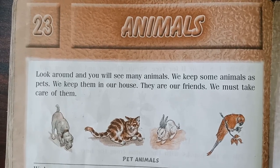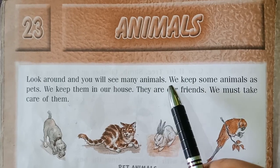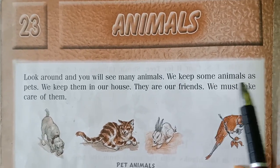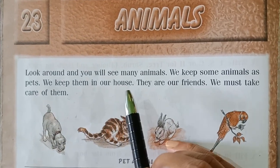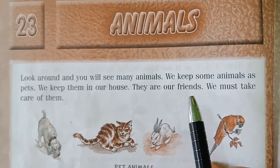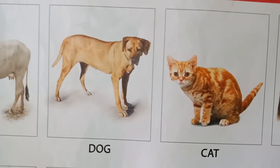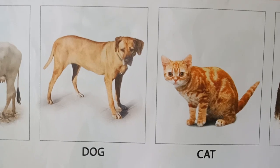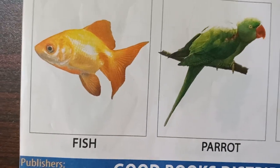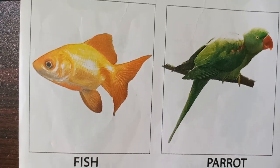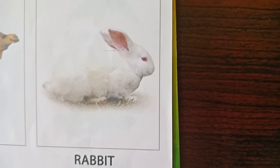Let us start discussing about animals. Look around and you will see many animals. We keep some animals as pets — we keep them in our house, they are our friends, and we must take care of them. Examples of pet animals are dog, cat, fish, parrot, and rabbit.